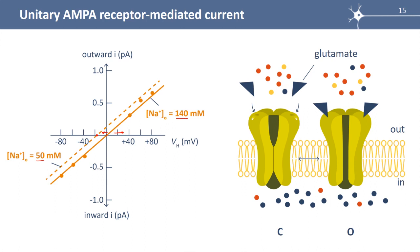Why is the reversal potential equal to zero millivolt? We can calculate the reversal potential of a current carried by cations, sodium and potassium. It's approximated as: E_rev = 58 × log([Na⁺ + K⁺]_outside / [Na⁺ + K⁺]_inside), which equals 58 × log((140 + 3) / (120 or 30 + 14)). This is close to zero millivolt — not exactly, but approximately zero.